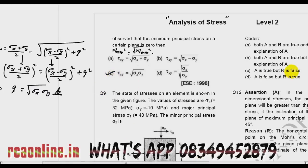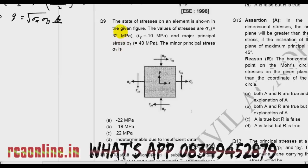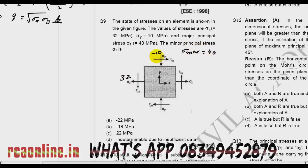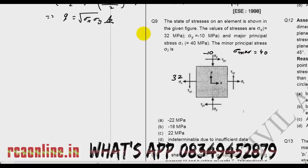So sometimes by observation you can get easy and quick answers. Now come to question number 9. The state of stress on an element is shown in the given figure. The values of the stresses are: sigma_x = 32, sigma_y = −10 (compressive), and major principal stress sigma_max = 40. The minor principal stress will be — this is one of my favorite questions.